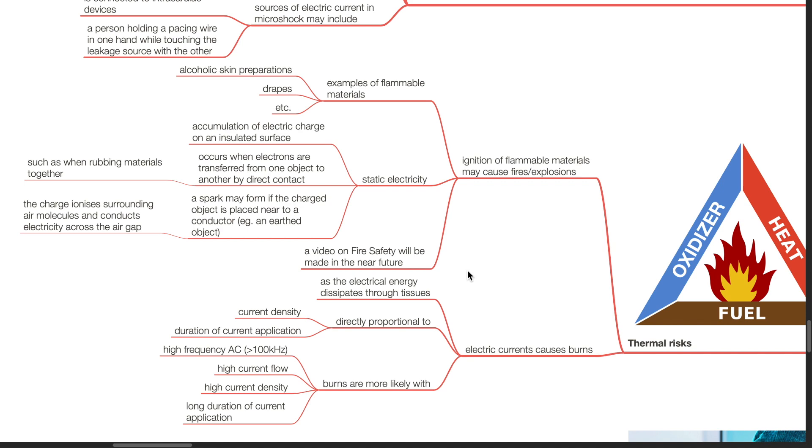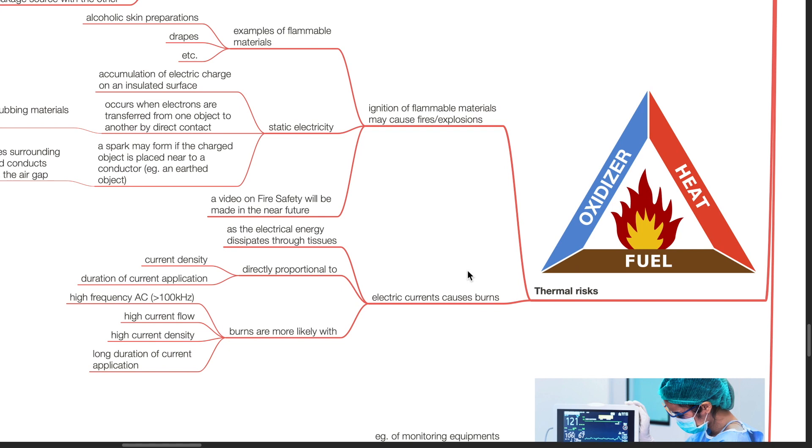Electric currents can also cause burns as the electrical energy dissipates through tissues. The heat generated is directly proportional to current density and duration of current application. Burns are more likely to occur with high-frequency AC of more than 100,000 Hz, high current flow, high current density, and long duration of current application.